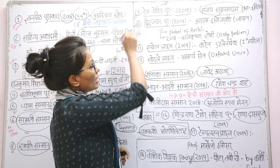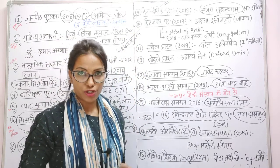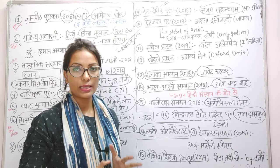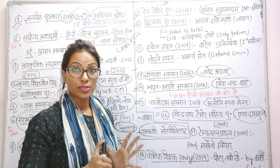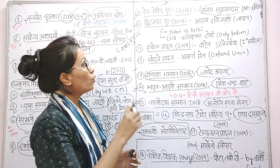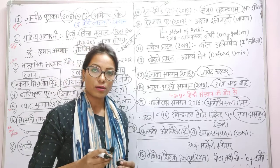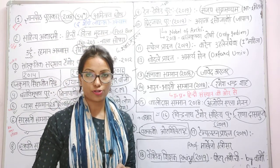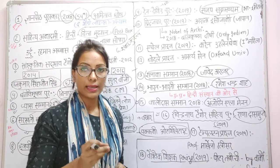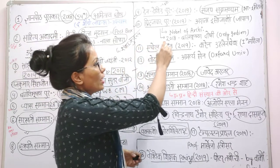The Pritzker Prize is called the Nobel of Architecture. You may be asked in the exam which prize is called the Nobel of Architecture — the answer is the Pritzker Prize. You can be given four options and asked to identify the Pritzker Prize.